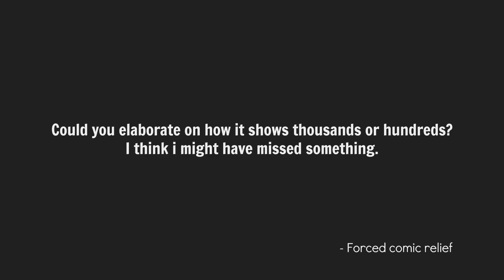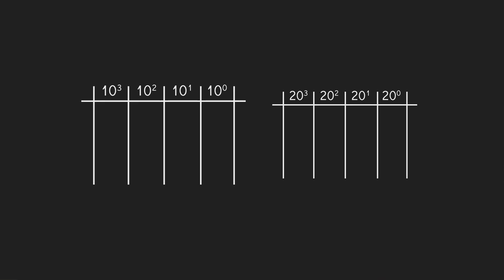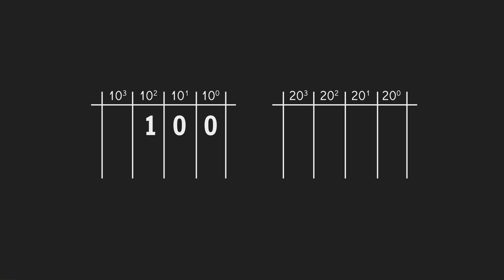Someone asked: could you elaborate on how it shows thousands and hundreds? The KI numeral system uses standard positional notation just like our numeral system, except we use base 10 and they use base 20. So 100 in our system is 1,0,0 — that is 1×10² + 0×10¹ + 0×10⁰. 100 in KI numerals would be 5,0 — that is 5×20¹ + 0×20⁰.